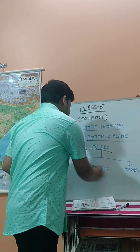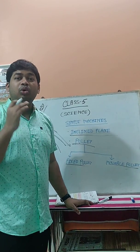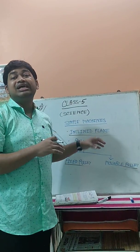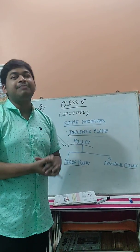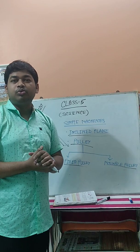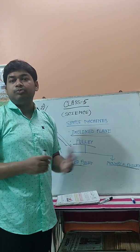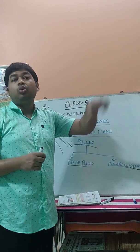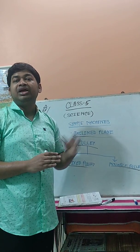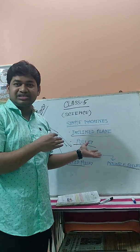The pulley is of two types: the first is the fixed pulley and the second is the movable pulley. A fixed pulley always remains at the same fixed place. Examples of fixed pulleys include the well pulley and the flagpole pulley. A movable pulley moves along with the load. Examples of movable pulleys include the rope and crane systems.